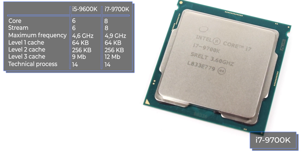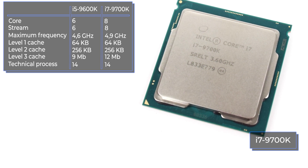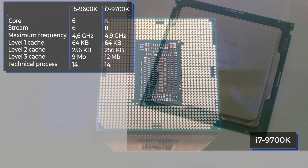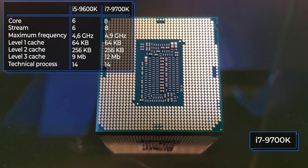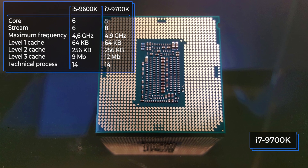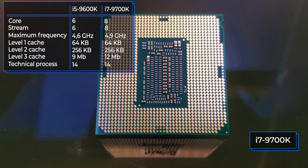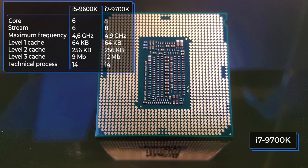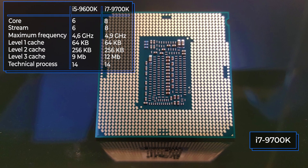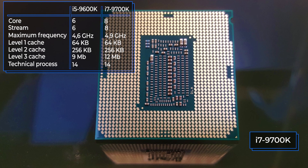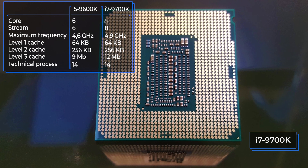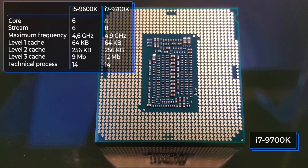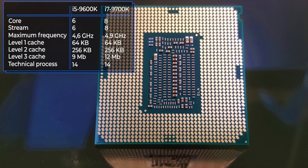The designation K indicates the unlocked multiplier and the possibility of overclocking. The process technology is identical for both chips. As a result of the 9700K's larger number of cores, it is the leader in terms of all levels of cache memory, so the 8-core processor gets the advantage.